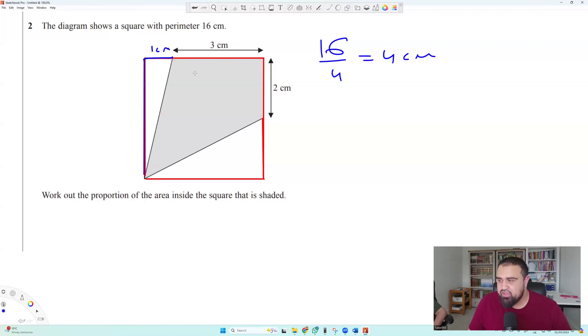Now, let me give you the game plan. We are asked to calculate the proportion of the area inside the square that is shaded. The game plan is to calculate the area of the whole square, which is just 4 times 4, which is 16 centimeters squared. That's the area of the whole square.